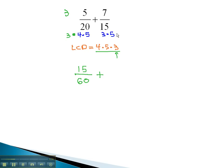Plus the second fraction, you notice, is missing a factor of 4 from the LCD. So, we will multiply the numerator and denominator by 4 to get 28 over 3 times 5 times 4, which is 60.